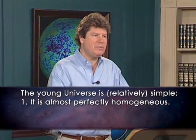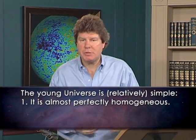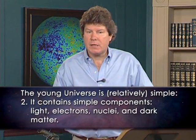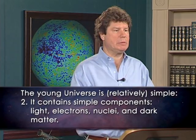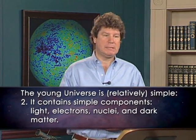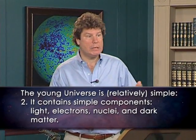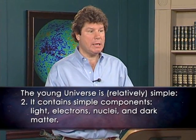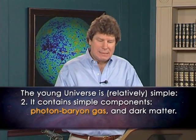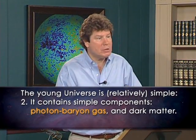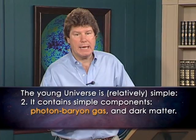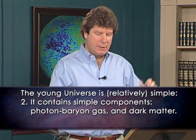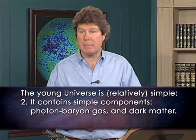First, the young universe is almost perfectly homogeneous — it's just a smooth gas. Second, the components of this gas are themselves relatively simple and well understood: light, electrons, nuclei, dark matter. Furthermore, the light, electrons and nuclei are all tied tightly together into a single coherent photon-baryon foggy gas. So for much of the time, there are really just two components: this photon-baryon gas and the dark matter.